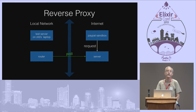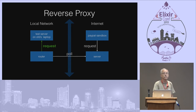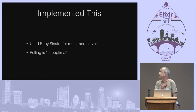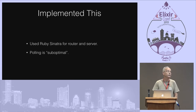The router polls the server, and eventually the server has a transmission from the sandbox, so it retrieves that information and forwards it to the laptop. Simple solution to the problem — a reverse proxy — allowing you to run your laptop with third-party services while inside your local network. I used Ruby Sinatra for both the router and the server. The trouble is the polling is rather suboptimal because the response time from your laptop to the sandbox is dependent on your polling interval. But in a development environment it's not too big a deal.